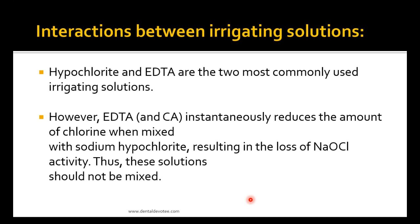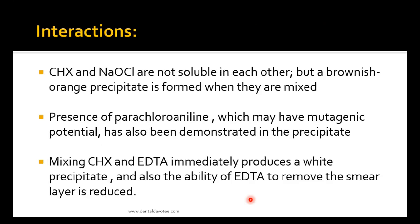Interactions between irrigating solutions: hypochlorite and EDTA are the two most commonly used irrigating solutions. However, EDTA and citric acid instantaneously reduce the amount of chlorine when mixed with sodium hypochlorite, resulting in the loss of NaOCl activity. Thus these solutions should not be mixed — they should be used in sequential order: first NaOCl and then EDTA.